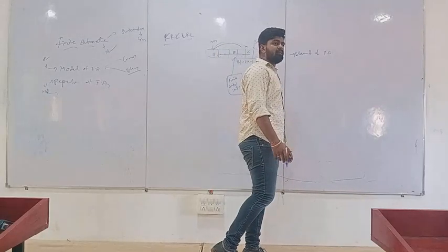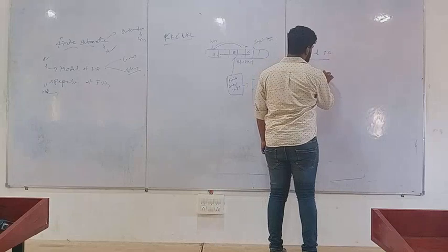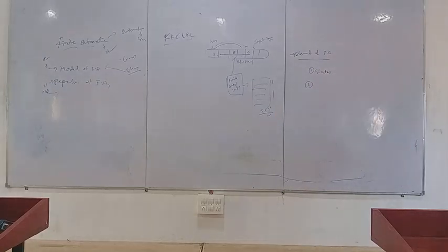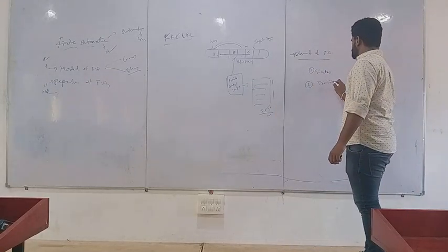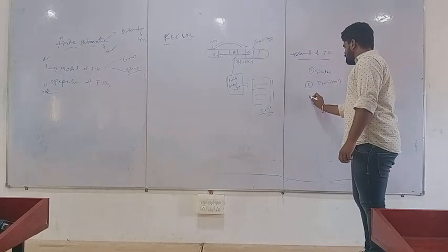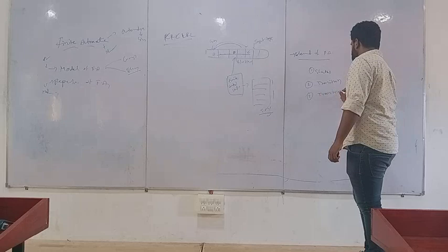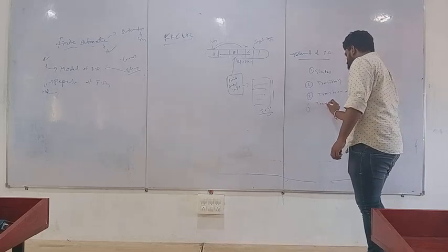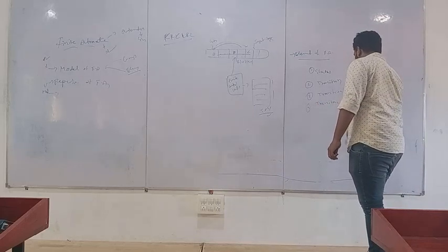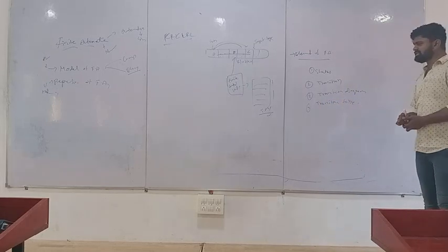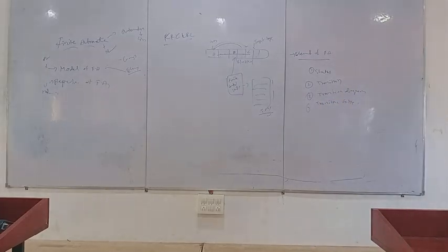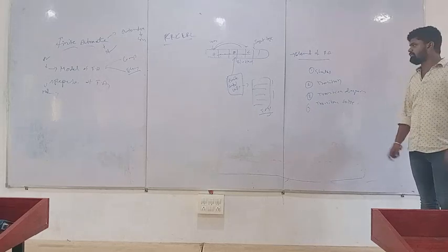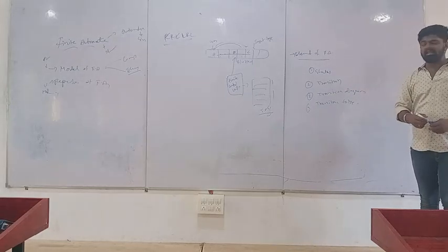You have different types of elements in finite automata. The first one is states, the second one is transition, the third one is transition diagram, and the fourth one is transition table. All these four are called elements of finite automata.